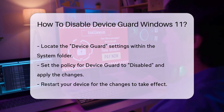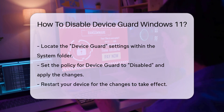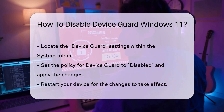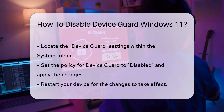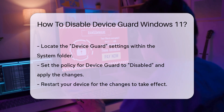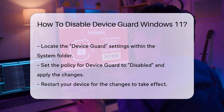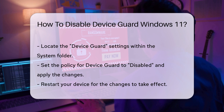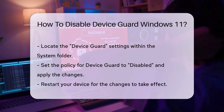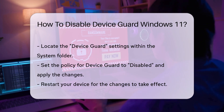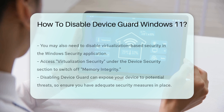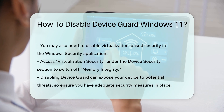Set the policy to Disabled. It is crucial to apply the changes and restart your device for them to take effect. In some cases, you may need to disable virtualization-based security. To do this, return to the Windows Security application, access the Device Security section, and look for Virtualization Security. Switch off the option for Memory Integrity.